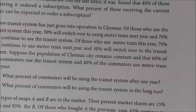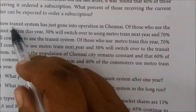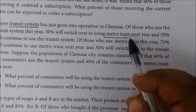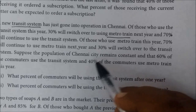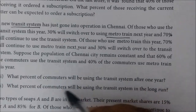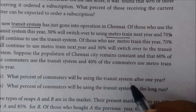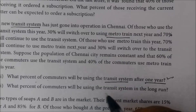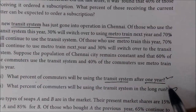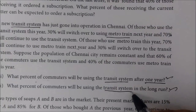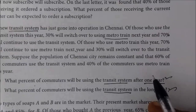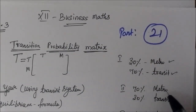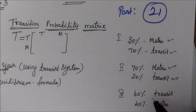There are two systems: one is Metro and another one is the Transition System. If we are going to travel, that system is the Transition System. The other is the Metro Train System. What percent of commuters will be using the Transition System after one year? The first stage is 30% Metro and 70% Transition System, then 70% Metro and 30% Transition System.